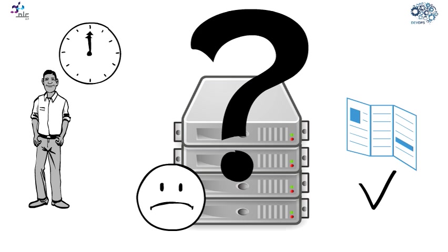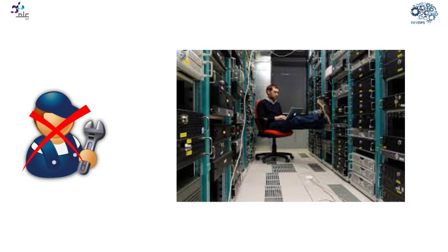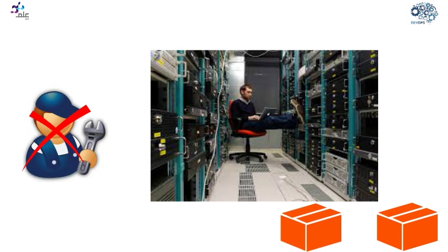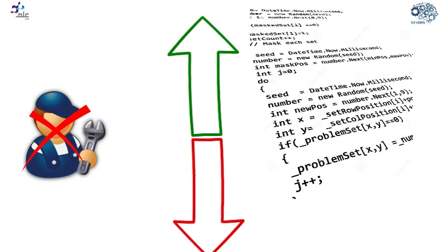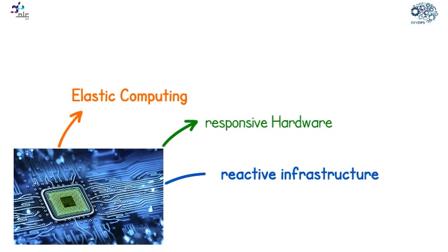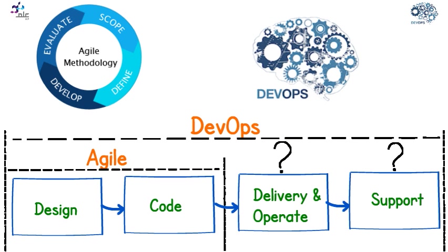If the developer gets the call at 2am for a production issue, he will surely write the proper log statements that enable him to solve the problem. Operations has changed completely — it is no longer hand work where people go to the data center and move boxes around. Now infrastructure runs as code, where you can scale up and down by running a few lines of code or config. Elastic, responsive, and reactive infrastructure is the norm nowadays. Agile methodology stops at creating system features and offers nothing beyond the boundaries of the source code. DevOps brings agility to the steps after the developer stops writing code, completing the Agile picture. At early days of DevOps, it was called 'Agile operations.'